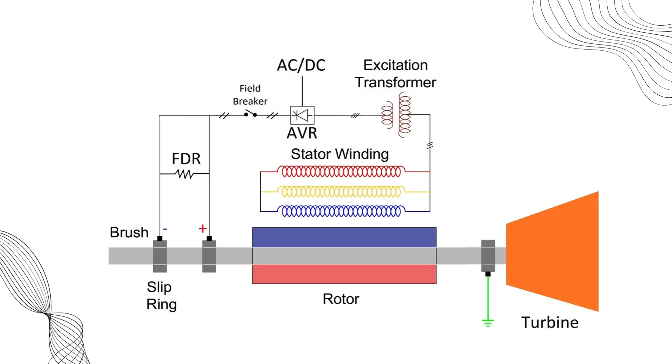At startup, when there's no output voltage from the generator, the AVR uses a separate AC or DC supply to initiate field flashing, helping to build up the voltage in the generator stator winding.